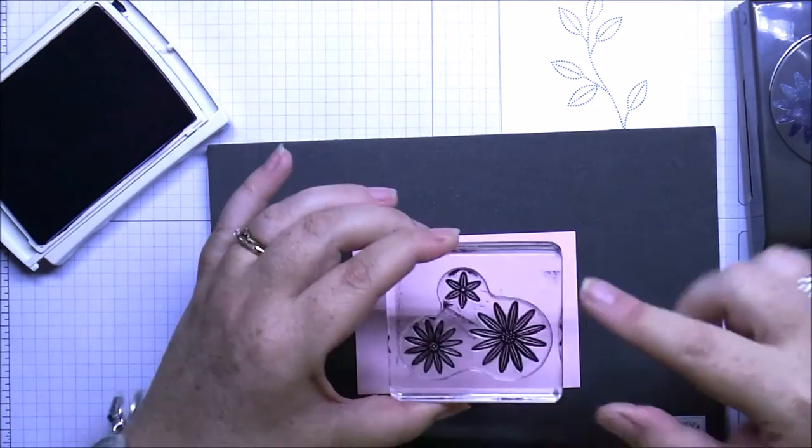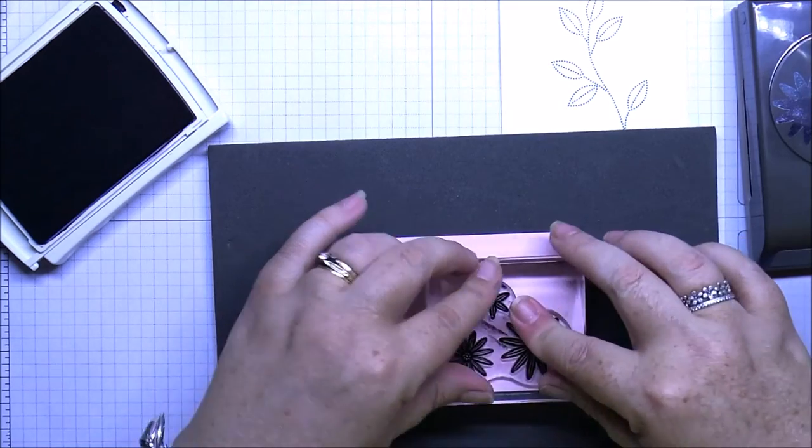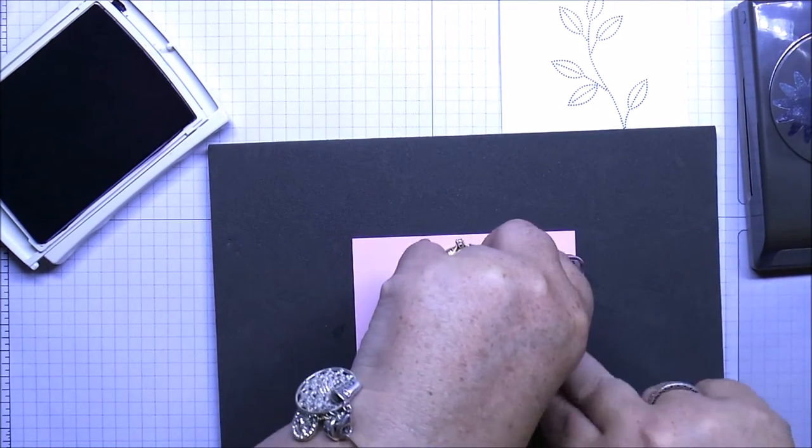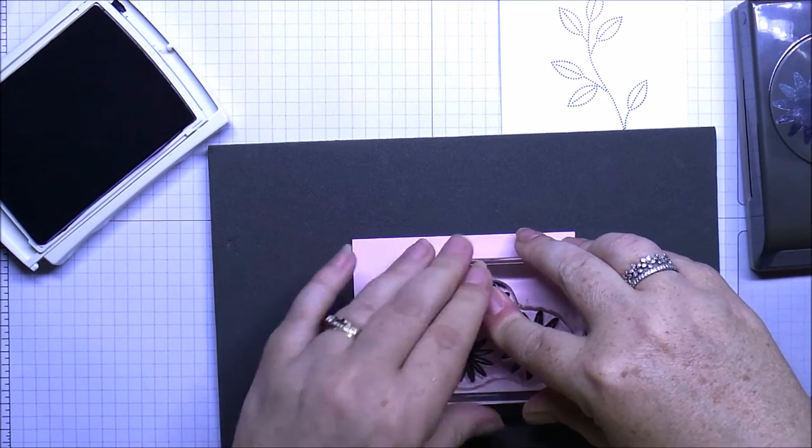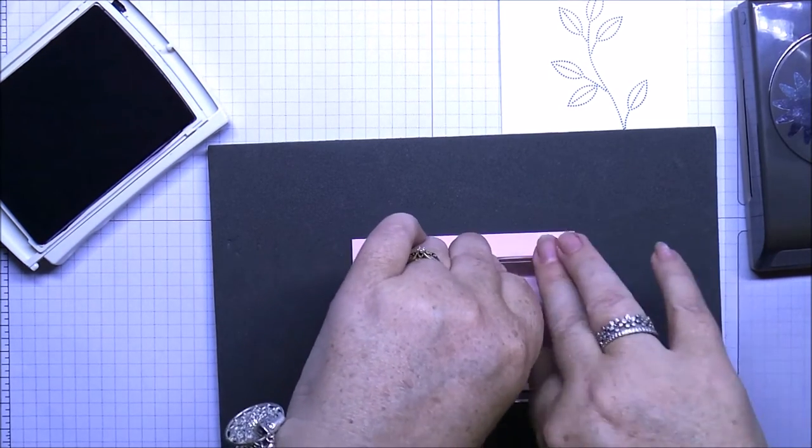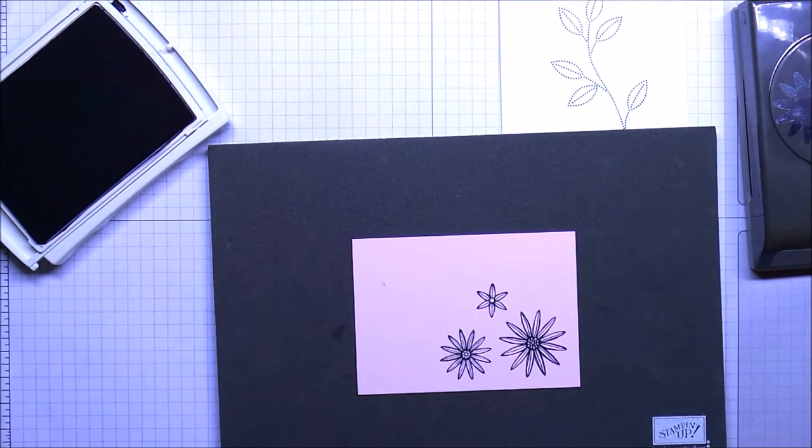And again, if you have these two stamps along the bottom of the cardstock or along the edge of your cardstock, that'll match up perfectly. Then you put your paper in. Okay, so there's our pretty stamp.